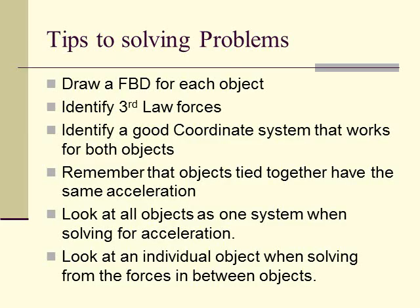Here are a couple of tips and a summarization of what I'm going to do in order to solve problems with multiple objects. Make sure we always draw a free-body diagram for each object involved. We're going to identify the Third Law forces — forces that are paired and always equal and opposite in the problem. Then we're going to identify a good coordinate system that works for both objects. We also need to remember that when objects are tied together, they have the same acceleration — the tugboat can't go faster than the barge and vice versa if they're tied together.